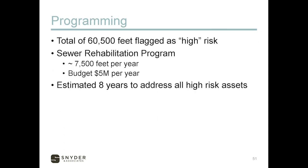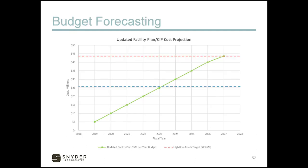On the example project, that was about 60,000 feet of sewer flagged as high risk. We broke that down into an eight-year program of about 7,500 feet per year, budgeting about $5 million per year to address all of it. So after eight years of that program, all those high-risk assets would be addressed and rehabilitated. Plotting that on the chart, we were able to show that the current CIP had about $25 to $27 million allocated to it.